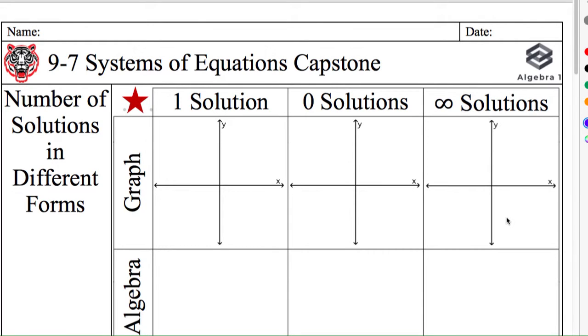All right, we are in Algebra 1. Today's date is the 26th, 2/26. Make sure that your name is on your paper. All right, so we haven't done math in a while. So we're going to do some healthy review.